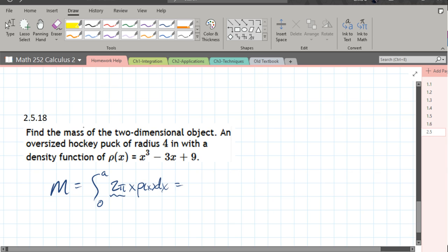Now, 2π, those are just constant numbers. Okay, so all we need to do is plug in our actual ρ function, and for us here, radius is 4, so a is 4. I probably should have used r, but that's okay.